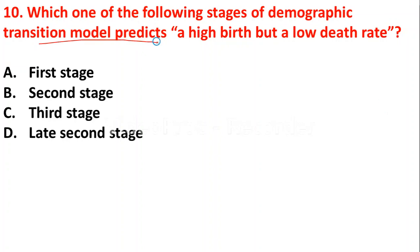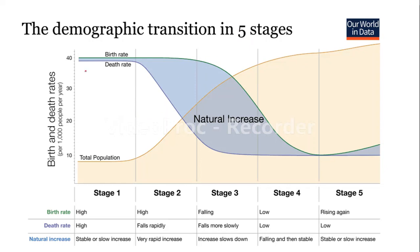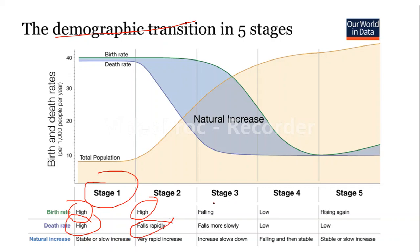Question 10: Which stage of the demographic transition model predicts a high birth rate but a low death rate? Option A - first stage; option B - second stage; option C - third stage; option D - late second stage. The answer is the second stage. In stage one, both birth rate and death rate are high. In the second stage, birth rate is high but death rate is low. In the third stage, birth rate is falling and death rate is also slowly falling. In the fourth stage, both are low. In the fifth stage, birth rate starts rising but death rate is decreasing.